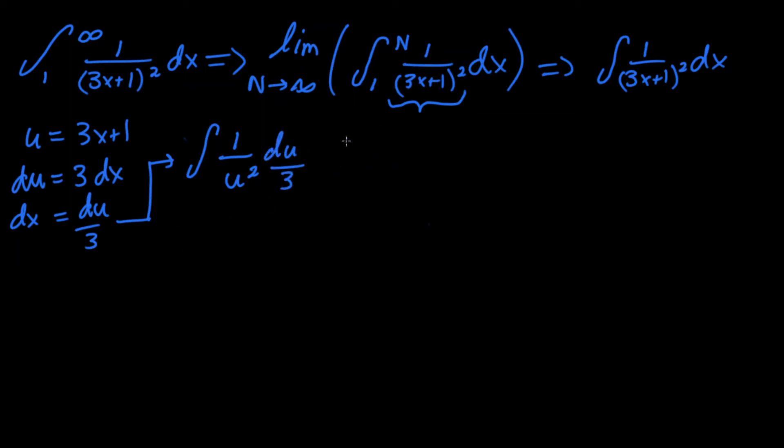Don't forget that constant. We can isolate that constant by having it be 1 third integral of u to the negative second, since that's just the same thing. We're making it easier to integrate du.